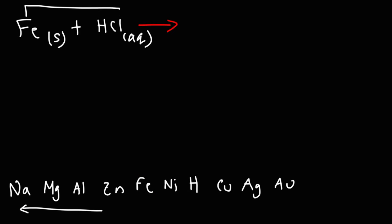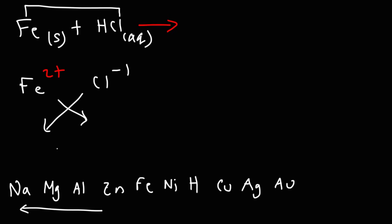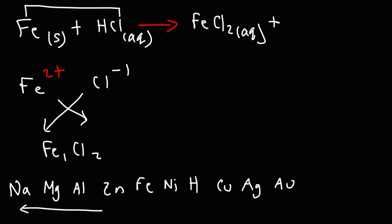Fe is going to pair up with Cl. Iron metal is going to give up two valence electrons, turning into the Fe 2+ ion. Cl has a minus 1 charge, so when you pair these two together you get the chemical formula FeCl₂. Chlorides are generally soluble, except with silver, lead, and mercury, so this is going to be in the aqueous phase. It's important to know the solubility rules when dealing with reactions such as this.